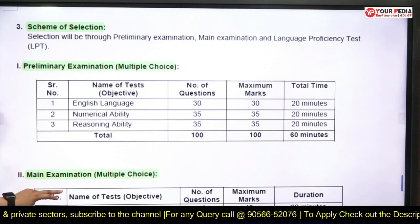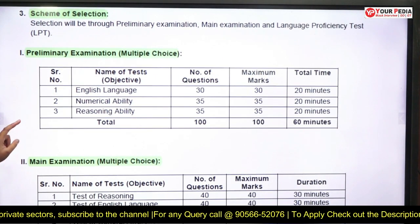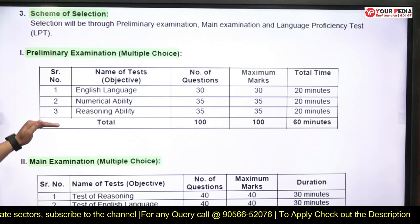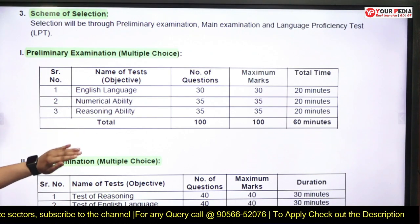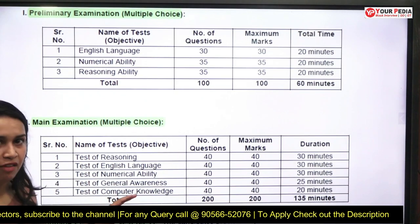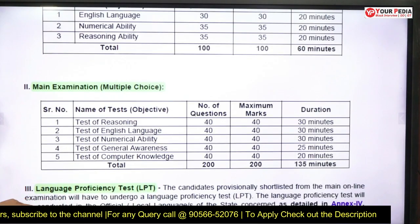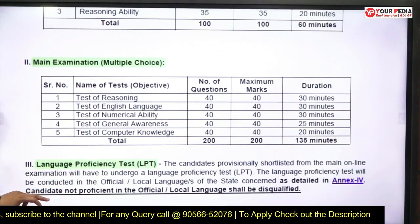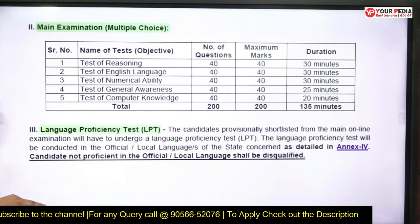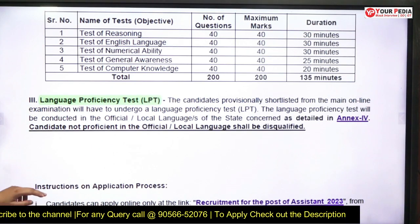There will also be a language proficiency test conducted along with the main examination. For the preliminary examination, there will be three sections — English, Numerical Ability, and Reasoning — with 100 questions total and 60 minutes provided, meaning only one hour for this phase. For the main examination, 135 minutes duration is provided with 200 questions.